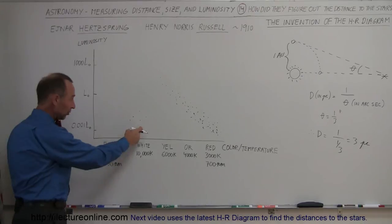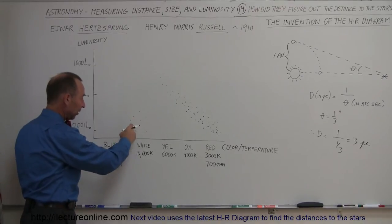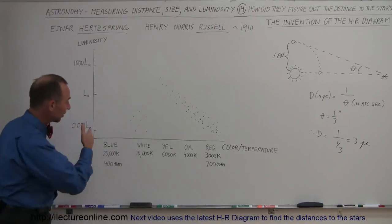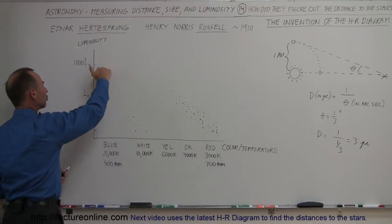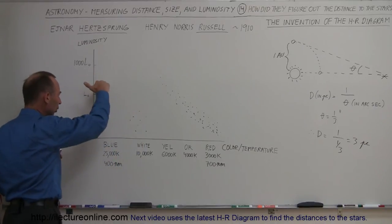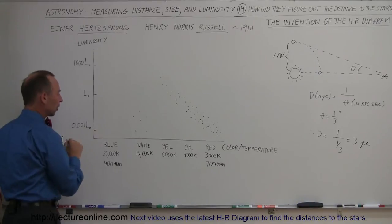But first of all, they didn't know what this was, why there were some stars there. Now obviously, remember, if you understand the chart here, the higher you're on the chart the brighter the stars, the lower you're on the chart the dimmer the stars.